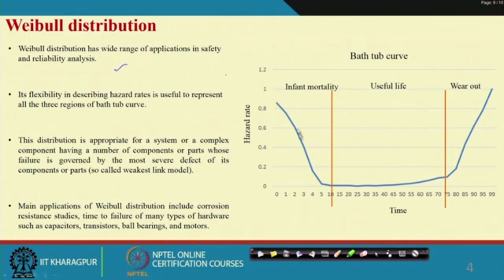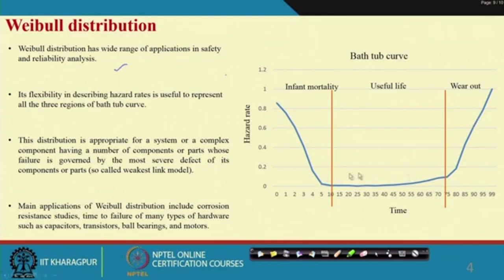We discussed earlier what is hazard rate and we plotted the hazard rate in terms of the bathtub curve. In the bathtub curve there are three regions: infant mortality, useful life, and wear-out phase. Weibull distribution can model the infant mortality or burn-in phase, the wear-out or burn-out phase, and also the useful life or constant hazard rate phase.